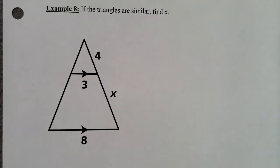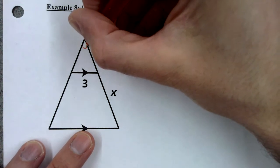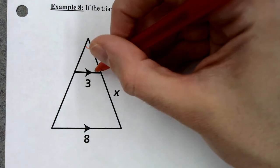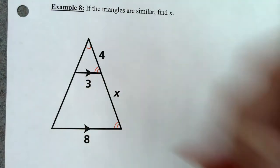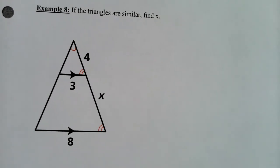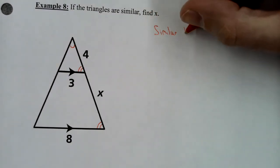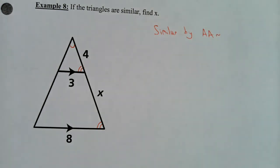Here's one more problem: if the triangles are similar, find x. The triangles are similar because this angle is common to both by the reflexive property, and the two corresponding angles are congruent because the lines are parallel — so angle-angle similarity. That means we can solve for x; if they're not similar, you cannot solve for x.